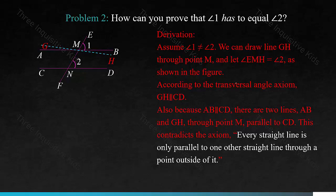This contradicts the axiom: every straight line is only parallel to one other straight line through a point outside of it. This was one of the eight axioms in geometry. This means that the assumption in the first step — angle 1 does not equal angle 2 — is false. Therefore, angle 1 has to equal angle 2.